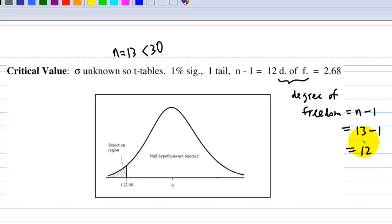From the table, we find out that this critical value is negative 2.68. If a test statistic is less than negative 2.68, then we reject the null hypothesis.